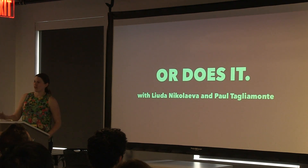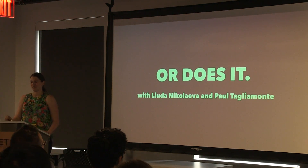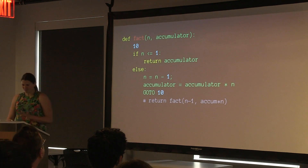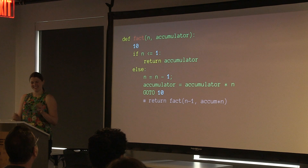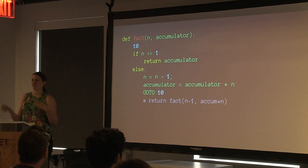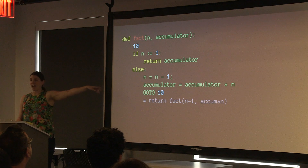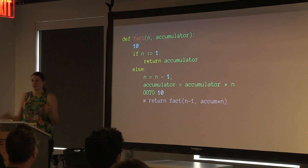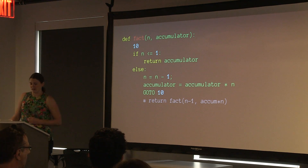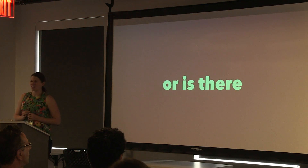What follows is some of the goofiest and most fun Python I've ever written — credit to my co-conspirator Paul Taglin. Here's the idea: tail call optimization is basically taking a recursive function and turning it into a loop. We want Python, when it gets to the recursive call at the end, to instead update the values of n and the accumulator and jump back to the beginning — a goto, basically. There's no goto in Python, but there is a goto in Python bytecode.